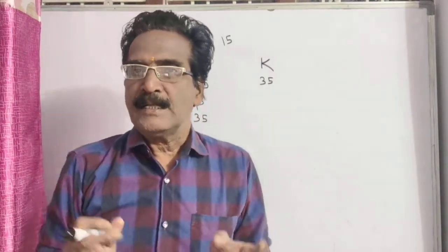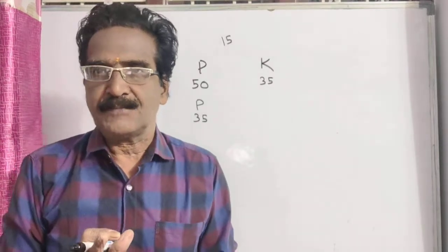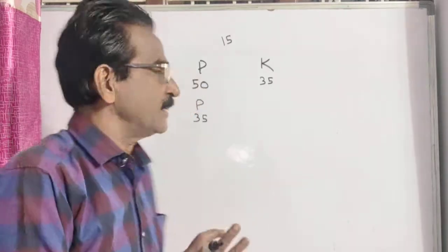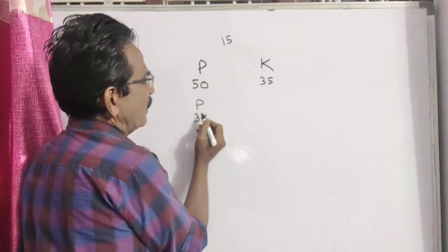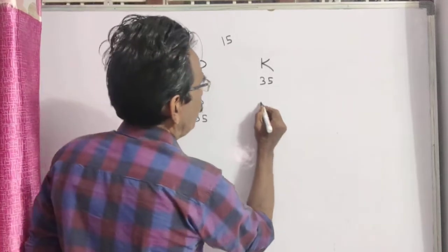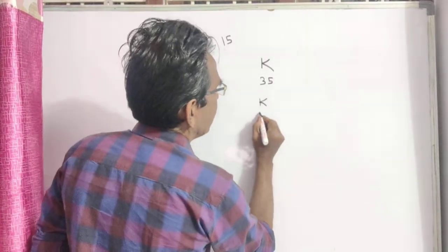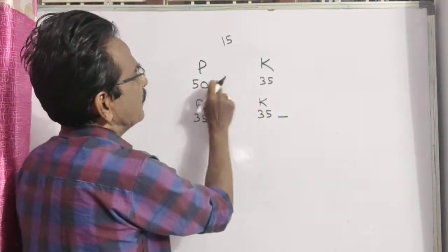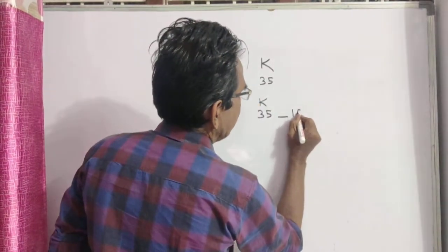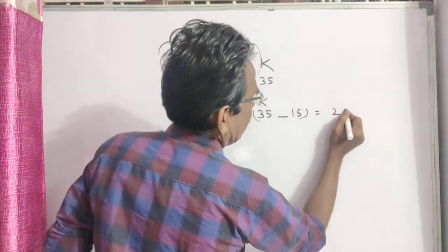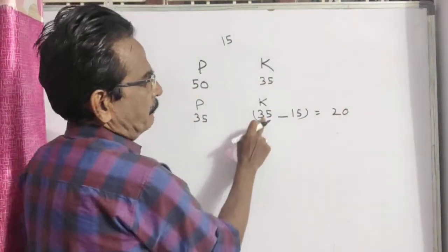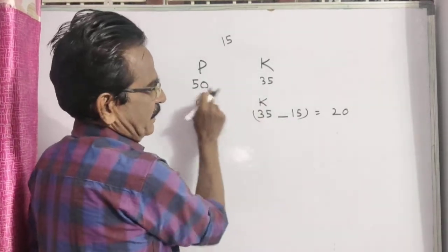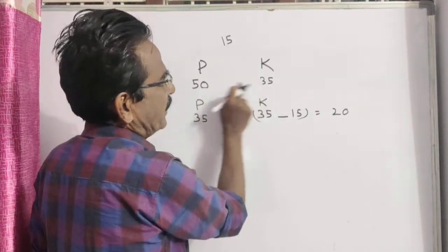One thing I tell you: the difference between the ages of two persons is always constant. So if Parag was 35, Kalyan will be 35 minus the difference of their ages, which is 15. So 35 minus 15 equals 20. Kalyan's past age equals Kalyan's current age minus the difference of their ages.